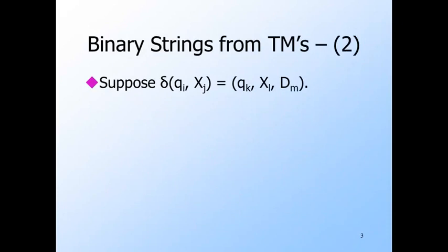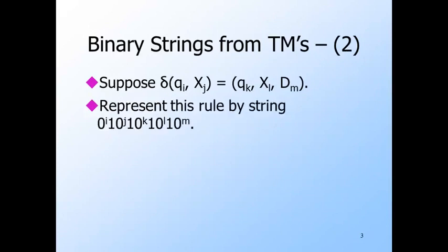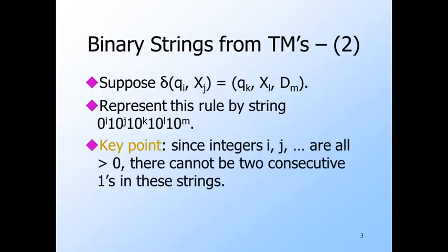Consider a rule expressed using the integer numbering of the components. The state is qi, scanning symbol xj. The Turing machine goes to state qk, writes symbol xl, and moves in direction dm. Represent this rule by blocks of i, j, k, l, and m zeros separated by single ones. Notice that all the integers are positive, so the representation for a rule never has consecutive ones.